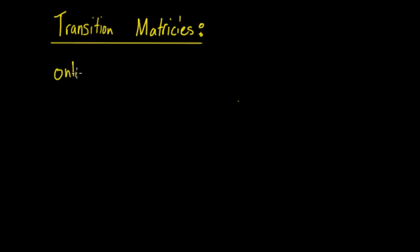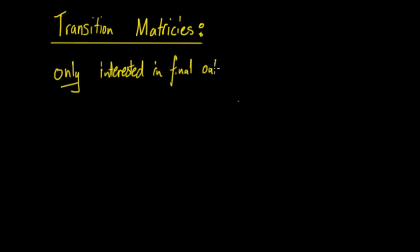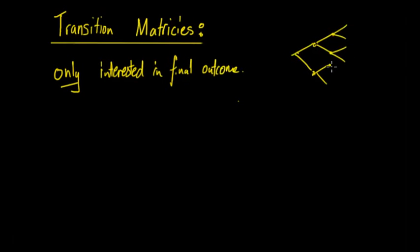That's really important - transition matrices are only interested in the final outcome. If you remember when we looked at Markov chains and had the tree diagram going with the different stages, if you cared about what happened in the middle stages at all, then you can't use transition matrices.